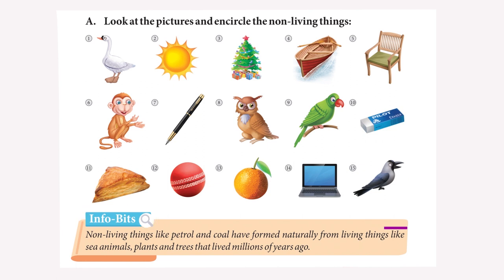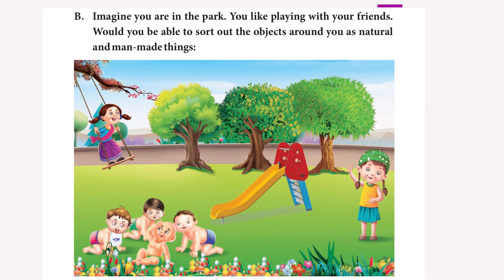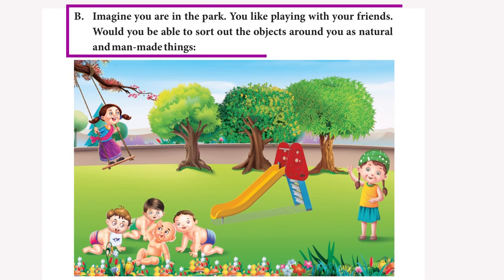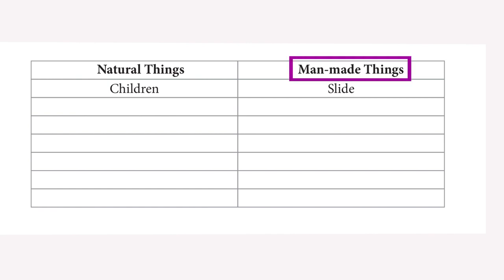Info Bits: Non-living things like petrol and coal have formed naturally from living things like sea animals, plants and trees that lived millions of years ago. Imagine you are in the park. Would you be able to sort out the objects around you as natural and man-made things? Natural things include children, trees, flowers, and grass. Man-made things include slides and swings.